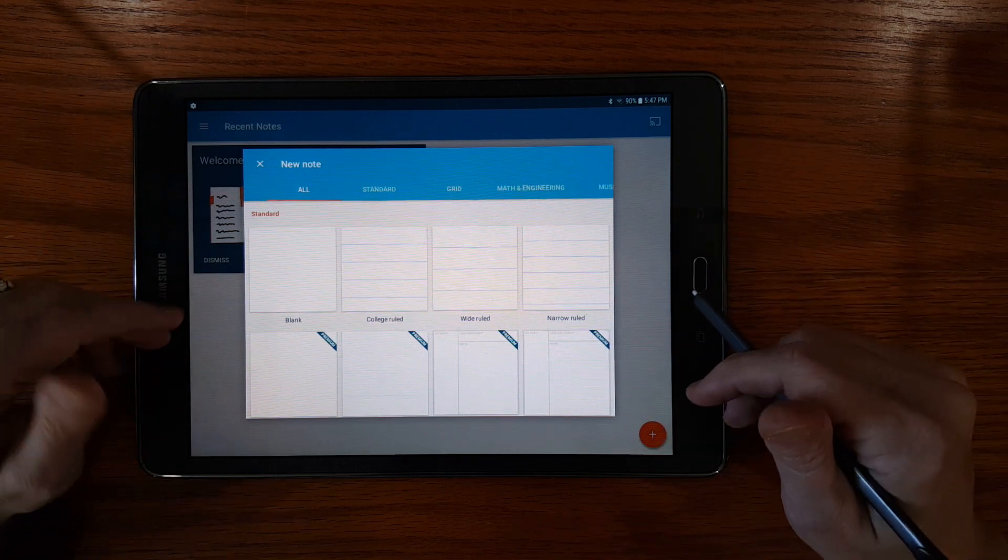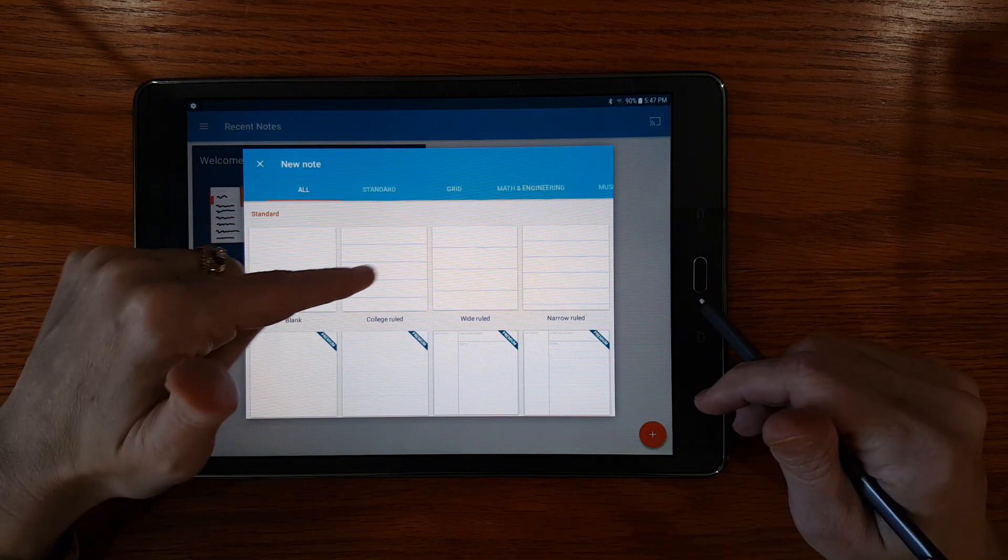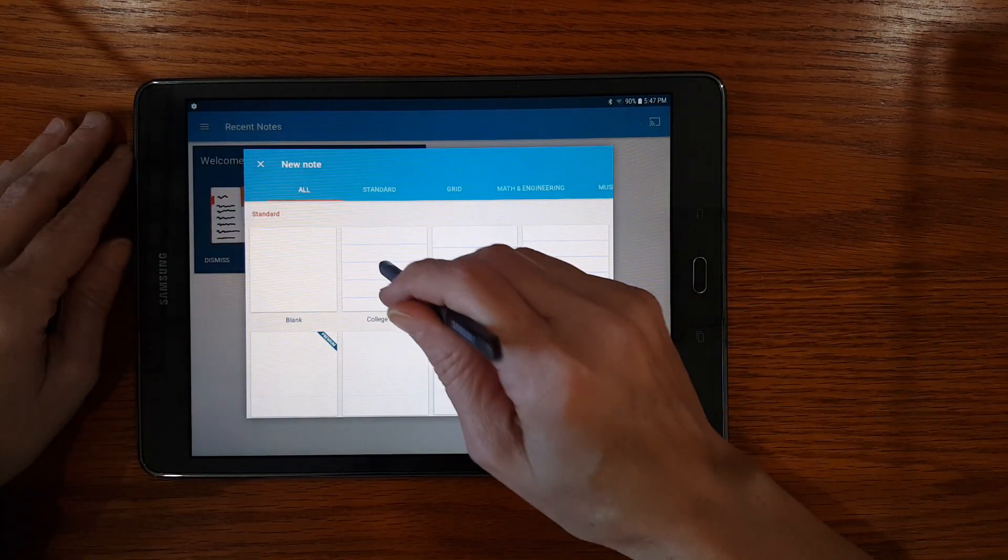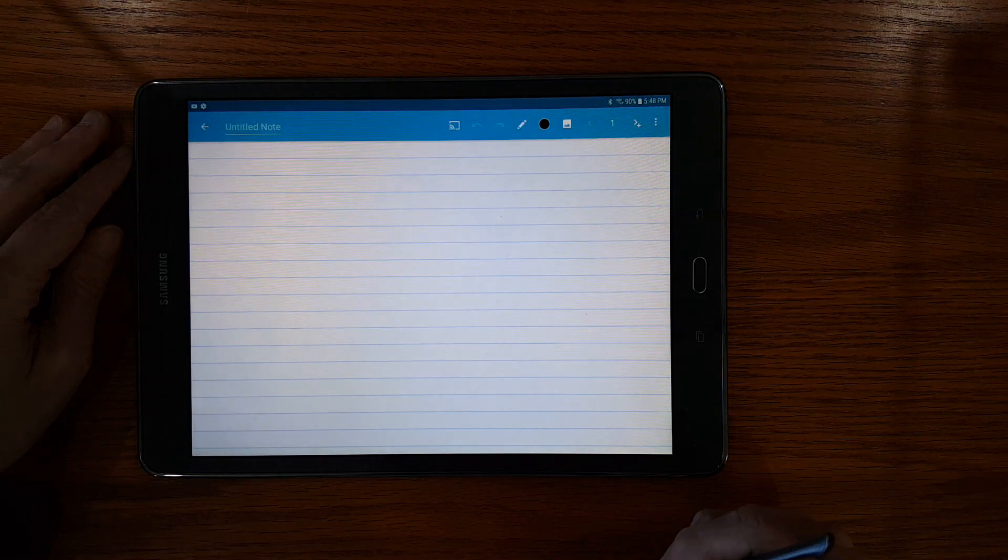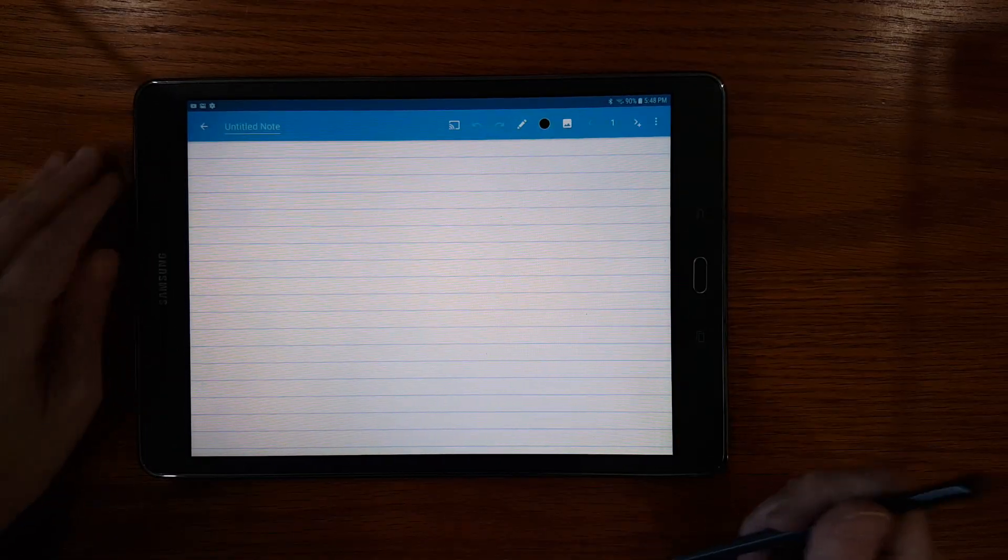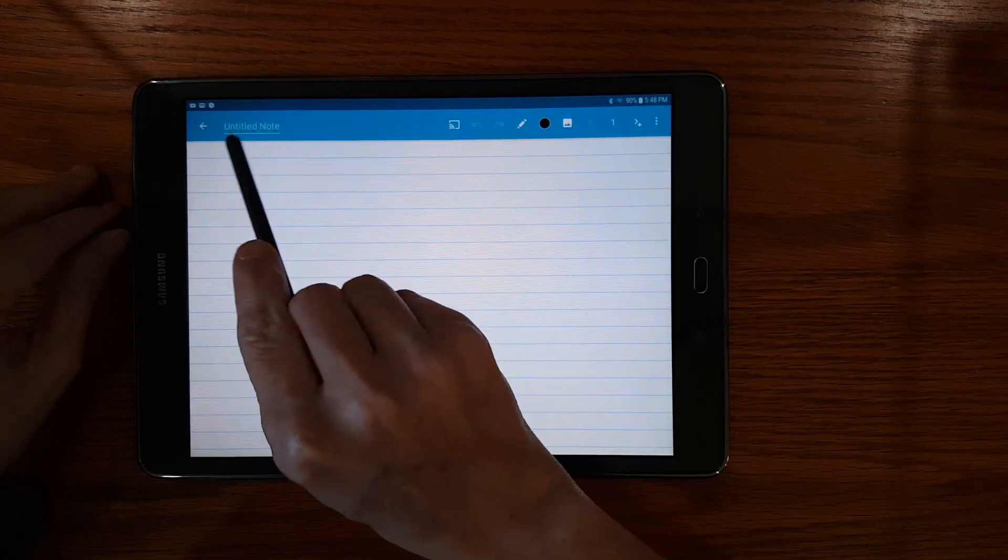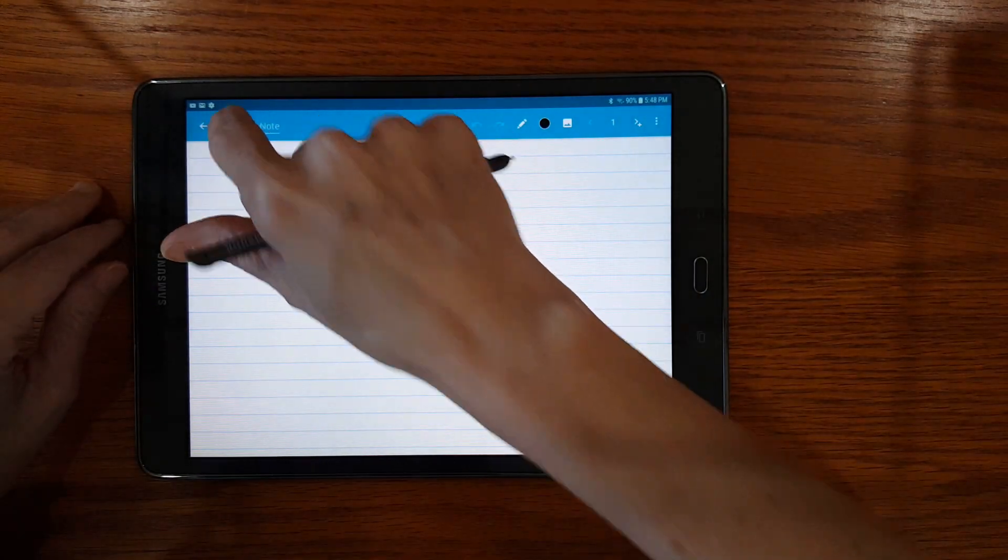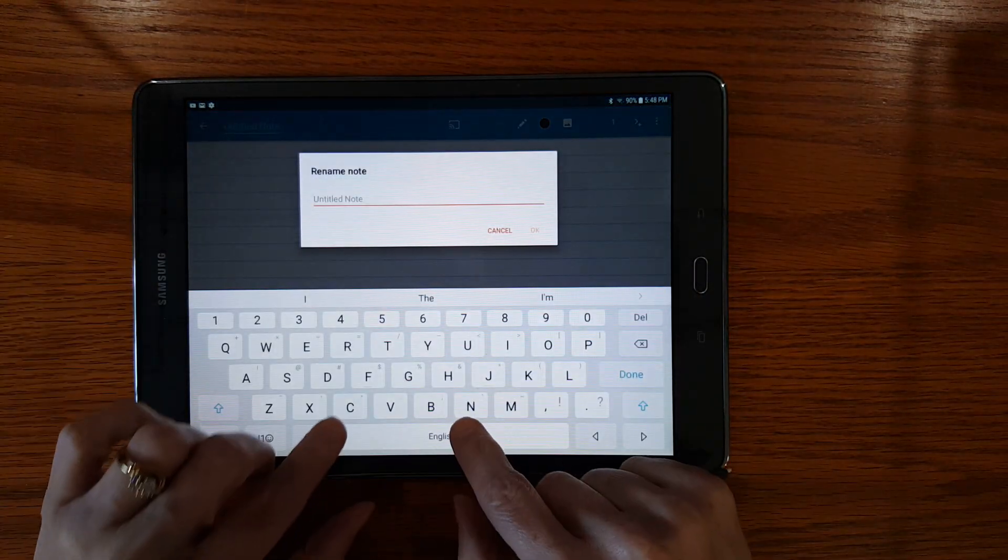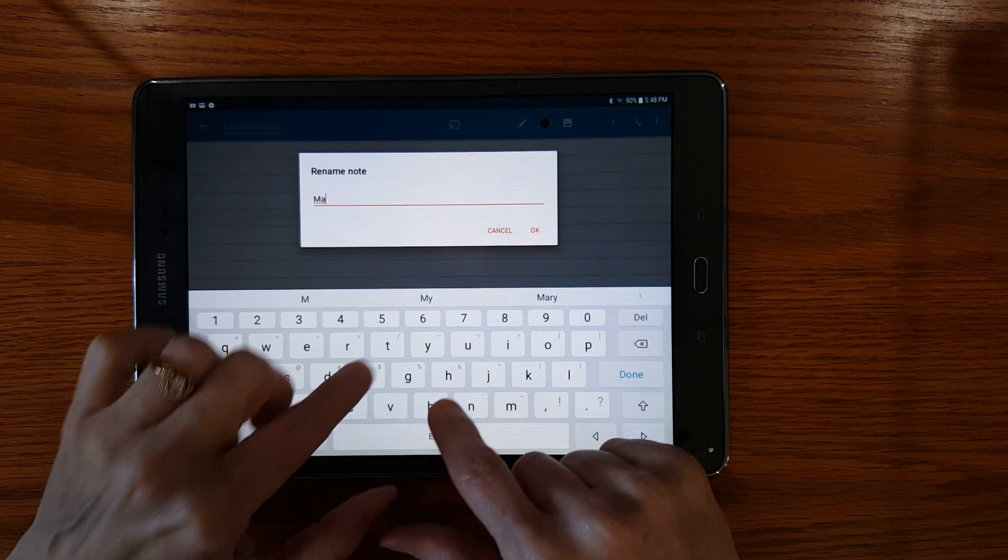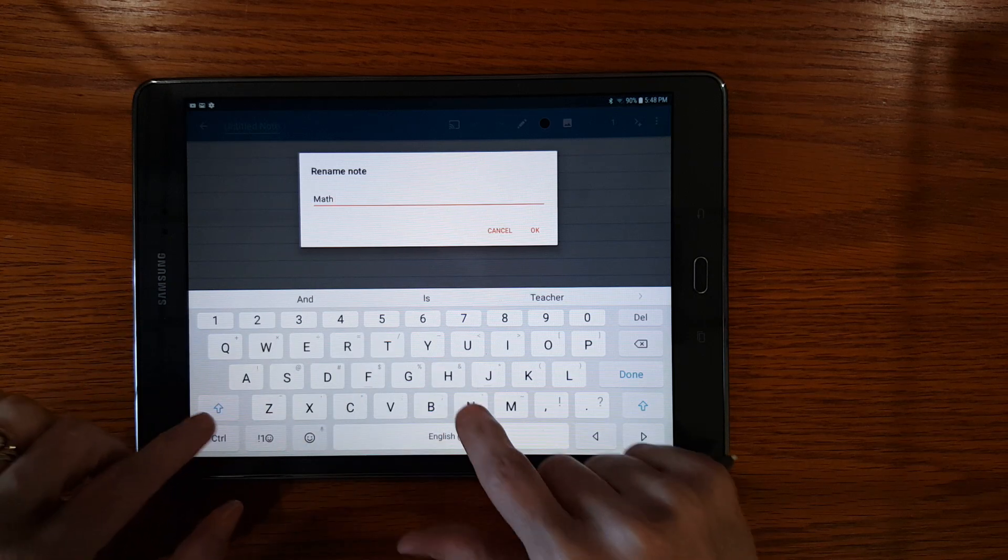But the base app itself you get blank, college ruled, wide rule and narrow rule. I'm going to go with college rule. You can title the note up here. Let's go ahead and give it a name. I'll call it math notes.